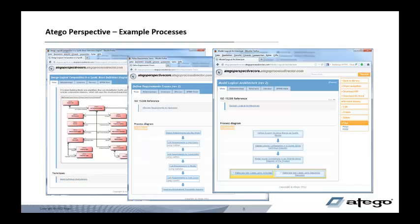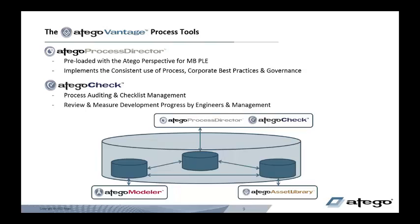The Otago Perspective process is provided in Otago Process Director, and here are some example screenshots of that process. The two tools that we provide the process inside are Otago Process Director — pre-loaded with the Otago Perspective for model-based product line engineering — which implements a consistent use of process to help you collaborate on best practices and govern your processes, plus Otago Check for auditing against checklists during your engineering project.